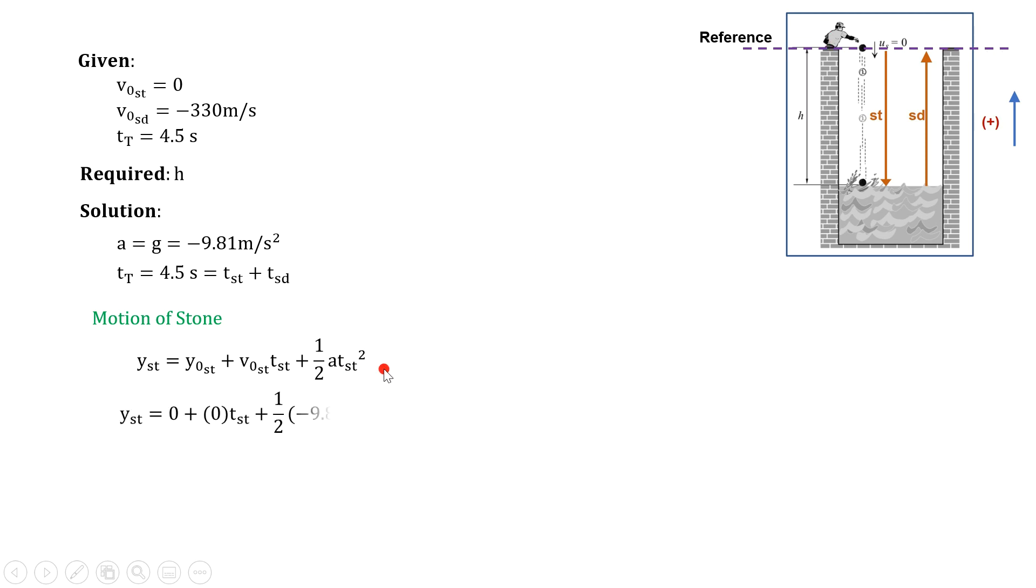Therefore, by substitution, we now have this equation of its final position. Then by simplification, final position is equal to negative 4.905 times t_st raised to 2. This follows that the distance traveled by the stone or the depth of the well is equal to the absolute value of its final position. Thus, depth h is equal to 4.905 times t_st raised to 2. And let's denote that as equation 1 for this solution.